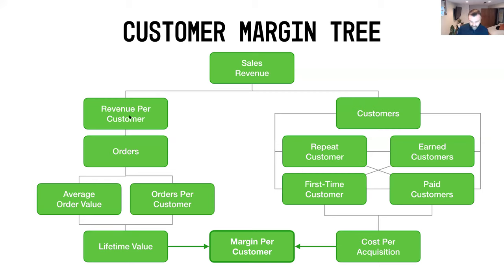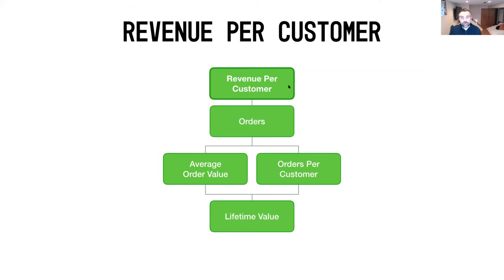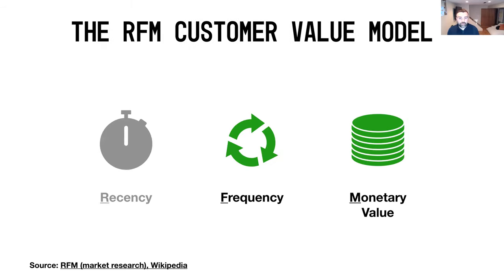Today we're talking about revenue per customer. To dive a little bit deeper, we're going to focus on how do you increase your revenue per customer, or what we also refer to as the lifetime value of a customer. To do that, there are really two levers that you could pull: your average order value, or your orders per customer. I liken it to an old-school model still used today called the RFM customer value model. For those who've been in marketing for a while, you may have seen this before.